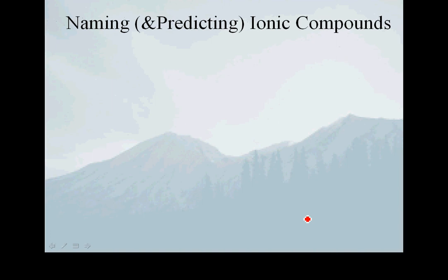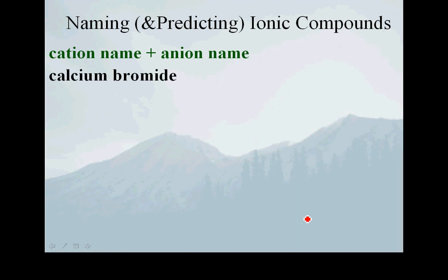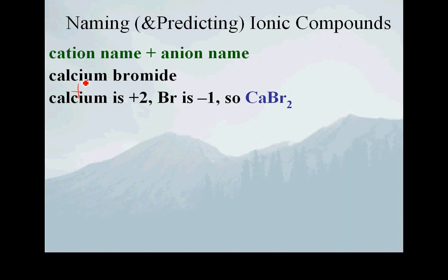Ionic compounds are just a little bit different — it's still pieces and parts but with a different convention. It's actually easier because we don't have mono, di, tri, tetra and all that. It's really just the name of the cation followed by the name of the anion. For example, calcium bromide: calcium is always plus two, bromine is minus one, so to get a neutral compound the ratio must be two to one, giving us the formula CaBr₂.